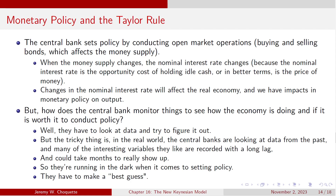How does a central bank monitor things to see how the economy is doing and understand whether it would be worth it to conduct such policy? This is tricky because they've got to look at the data, and in the real world central banks are looking at data from the past. A lot of interesting variables are recorded with a very long lag — it could take months to show up. GDP is recorded at a quarterly frequency and is typically revised over time. Not only do they have unreliable data, they've got slow-moving data. Inflation is released monthly, but again it may not always be super reliable and sometimes gets revised. These things take a while to show up and there are questions of reliability.